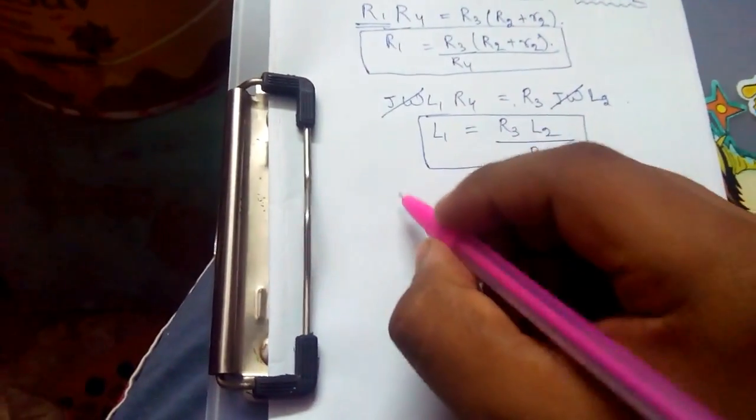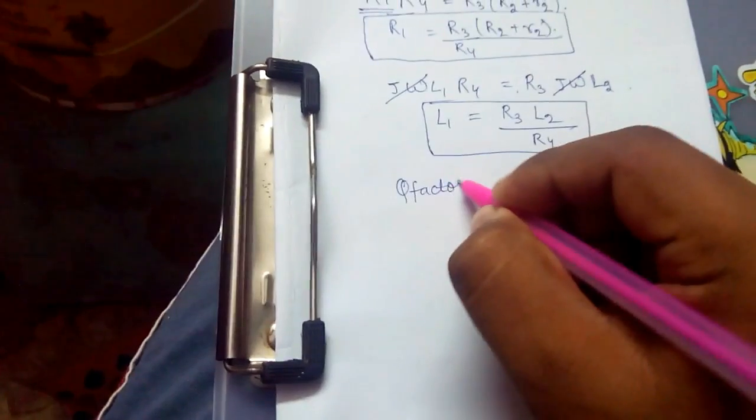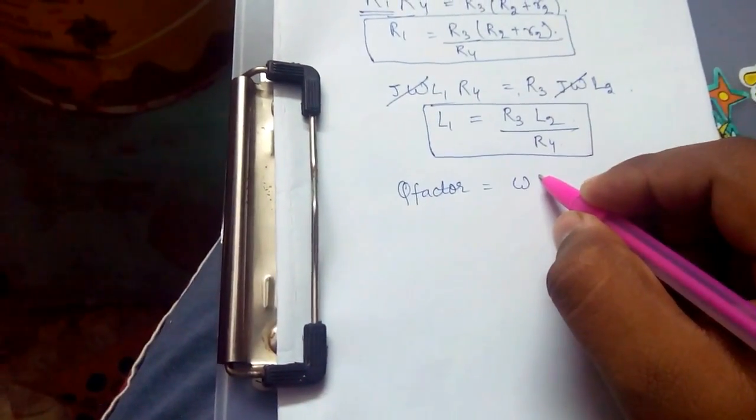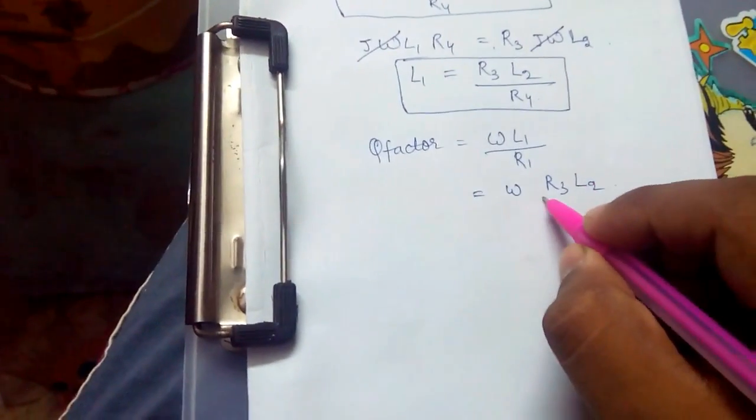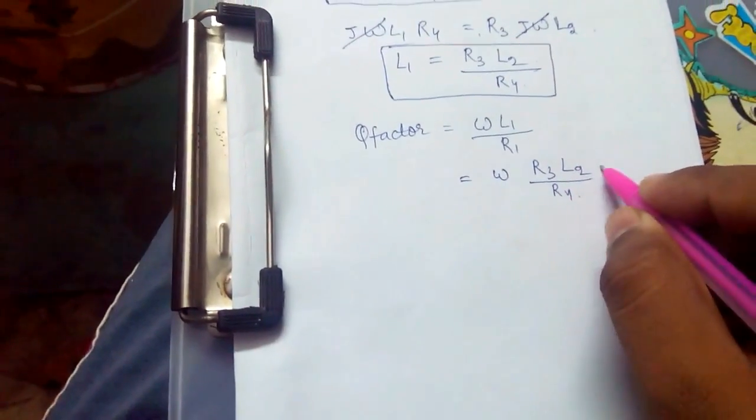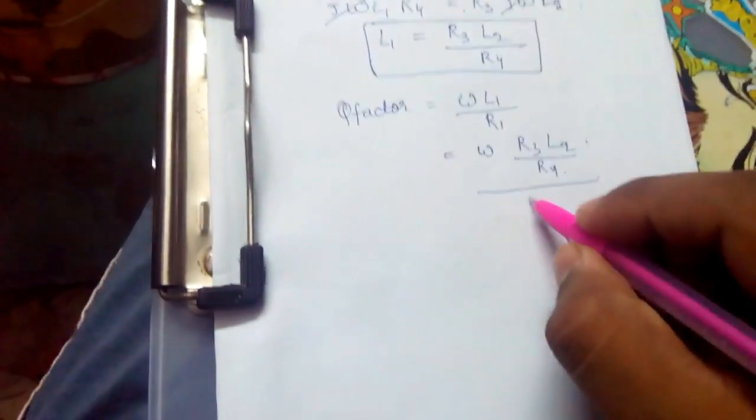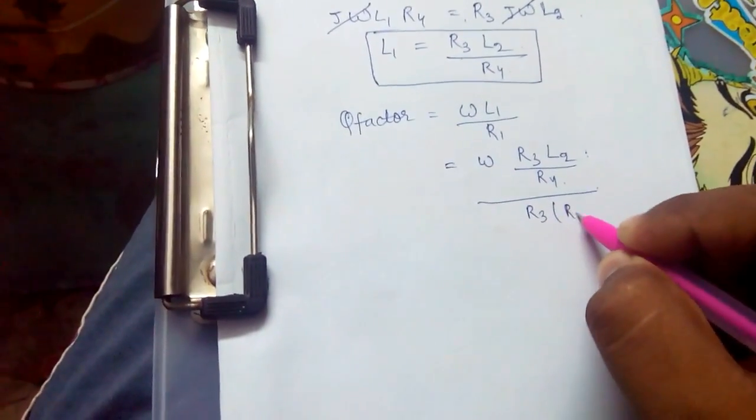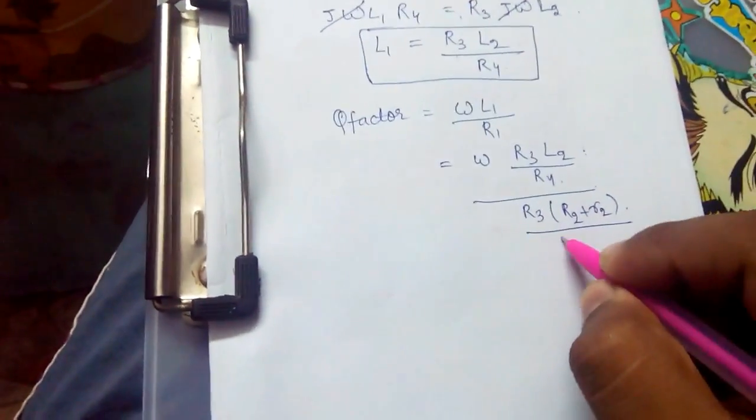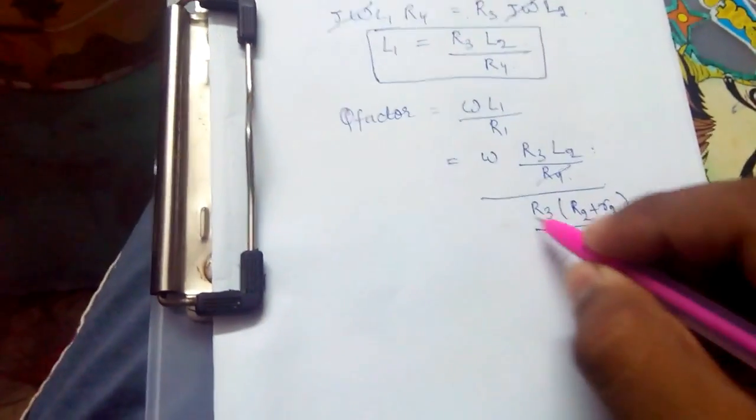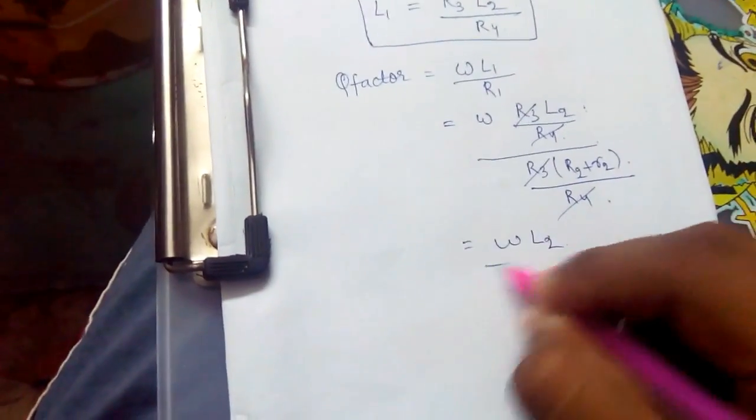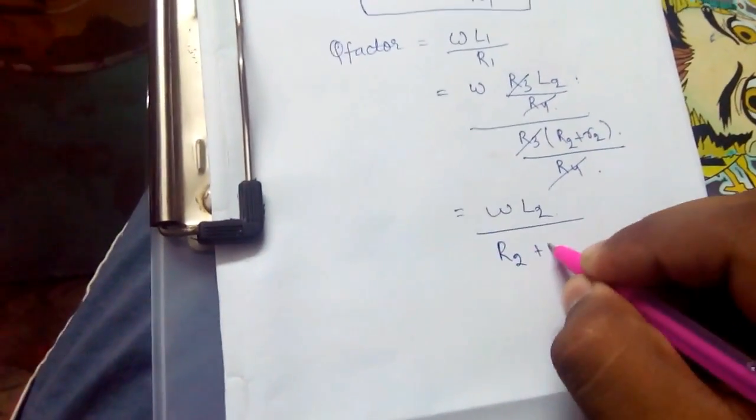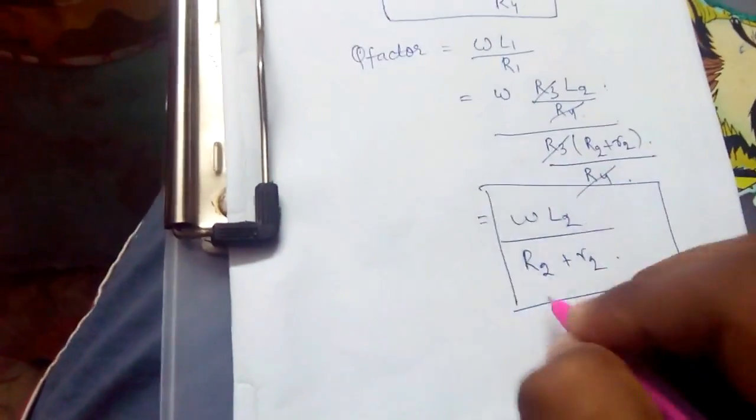Now to find Q factor, which is omega L1 by R1. Substituting the values for L1 and R1: R3 L2 divided by R4 over R3 times R2 plus small r2 divided by R4. R3 cancels, R4 cancels. Therefore, omega L2 divided by R2 plus small r2 would be our Q factor.